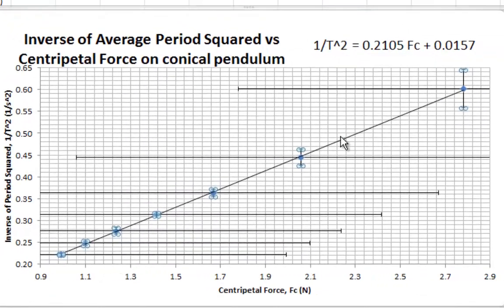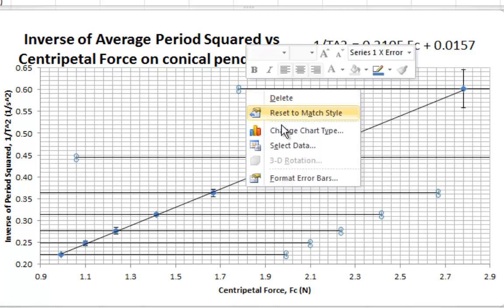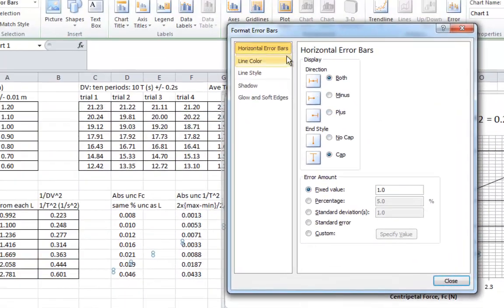As you can see, the vertical error bars are what we want. Now, the horizontal ones are massive. So, if we just click on them, and then we right click, we can actually format those horizontal error bars. If we go into formatting the horizontal error bars.